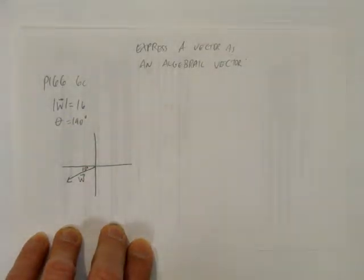So we've got our diagram in the quadrant. Now we're going to solve for each component.